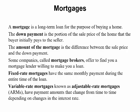First up, mortgages. A mortgage is a long-term loan for the purpose of buying a home. Generally, these can be 15, 20, or 30 years in length. The down payment is the portion of the sale price of the home that the buyer initially pays to the seller. Generally, you're looking for a 20% down payment. The amount of the mortgage — how much you are borrowing — is the difference between the sale price and how much you put down as a down payment. Some companies called mortgage brokers offer to find you a mortgage lender willing to take your loan.